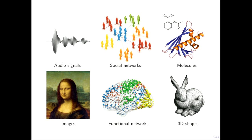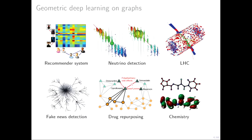Probably the most prominent examples are social networks. If you think of a social network such as Facebook or Twitter, this is a graph that contains hundreds of millions or even billions of nodes representing users, and the edges represent some relations or connections between them. You can think of graphs as a universal model for relations or interactions between different things. You can use graphs, for example, to model molecules in computational chemistry, functional networks of the brain in medical imaging, and three-dimensional shapes as meshes in computer graphics.